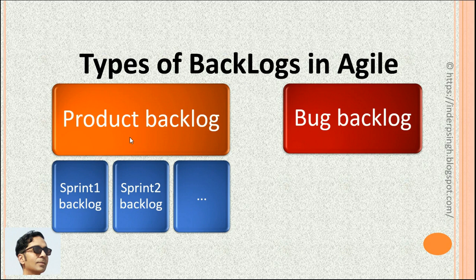Here is the Product Backlog. Separate Sprint Backlogs are created from it. For example, for Sprint 1, some Product Backlog items will be taken and that becomes a Sprint 1 Backlog. For Sprint 2, other Product Backlog items will be taken and it becomes a Sprint 2 Backlog, and so on.